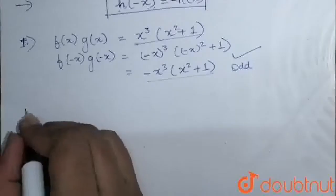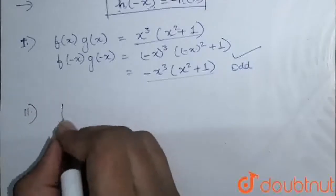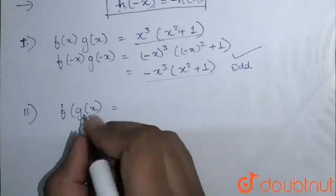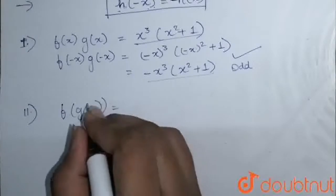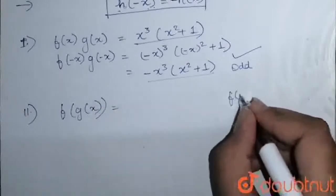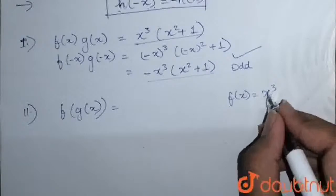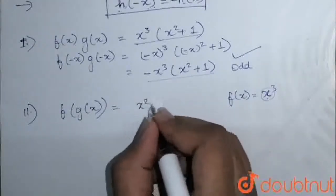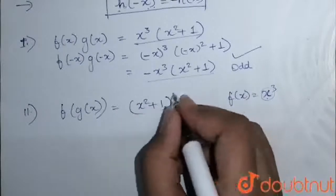Now, coming to second one, that is f(g(x)). We have to put g(x) in place of x. That is, f(x) equals x³. We have to put g(x) in place of this x. And g(x) was x² + 1, so the whole cube.